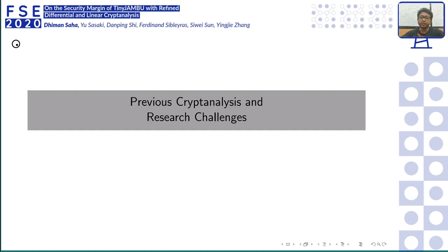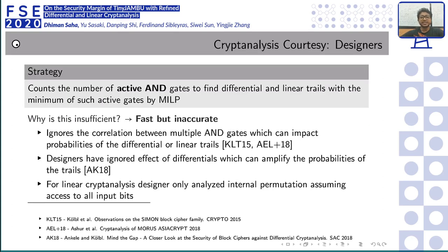Our work is the first third-party cryptanalysis of TinyJAMBU. The designers' strategy for proving resistance to linear and differential cryptanalysis uses the standard MILP modeling approach introduced by Mouha et al., which counts active AND gates. However, the question we are asking is: is this sufficient? Our verdict is that it is fast but inaccurate, and we prove this.